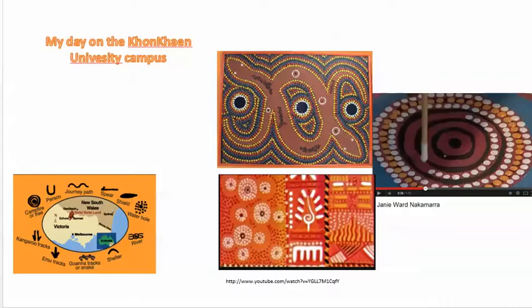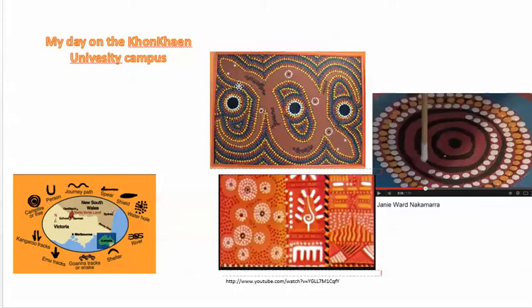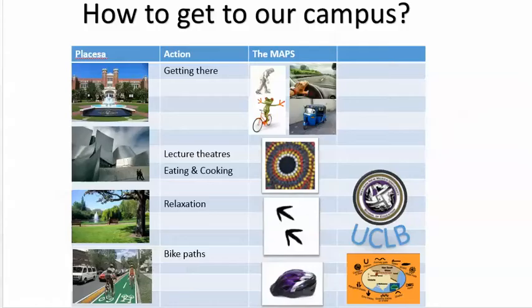So you can see there are weird things you haven't seen before. So what do we have here? We have an Aboriginal legend, an Aboriginal map. Then we have Aboriginal paintings, which very often are a map because they're stories actually related to the land and practices. Then maybe this is also one of the maps. And here, what is it? How to get to our campus, how to get to our school.